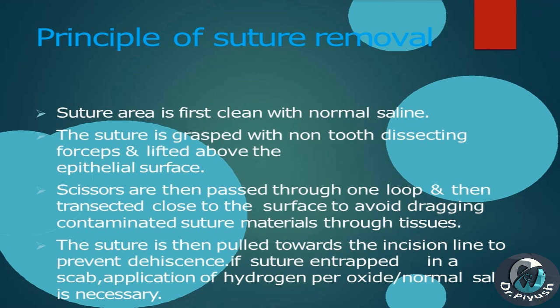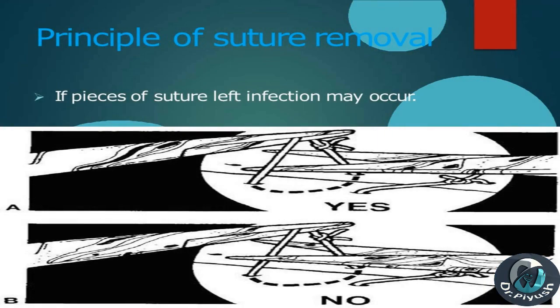Principle of suture removal: the suture area is first cleaned with normal saline. The suture is grasped with non-toothed dissecting forceps and lifted above the epithelial surface. Scissors are then passed through one loop and transected close to the surface to avoid dragging contaminated suture material through tissues. The suture is then pulled towards the incision line to prevent dehiscence. If the suture is entrapped in a scab, application of hydrogen peroxide or normal saline is necessary. If pieces of suture are left behind, infection may occur.